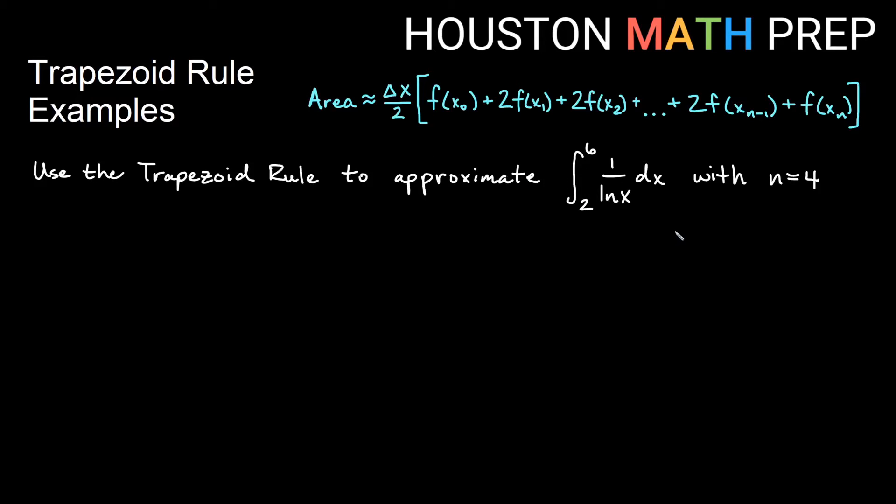Here we're going to do one more example. We're using only four trapezoids this time. This is actually a function that we would not be able to integrate by hand using elementary functions. So this is actually a great candidate for trapezoid rule. Our last example was kind of just to give you a first example with an easy function to deal with. 1 over ln x is not horrible to plug into, but it's not something we can integrate by hand.